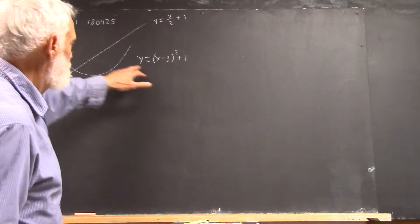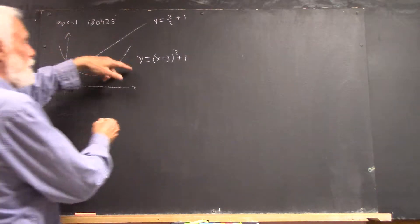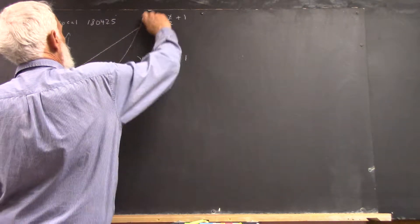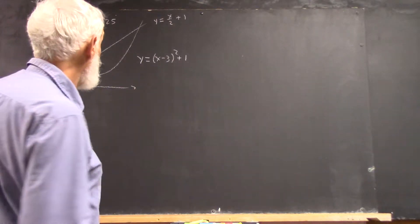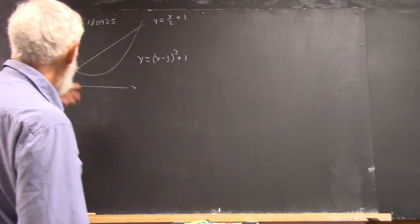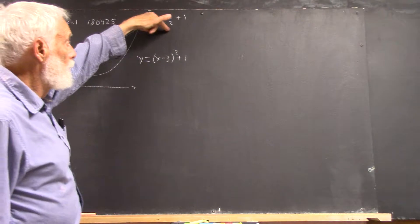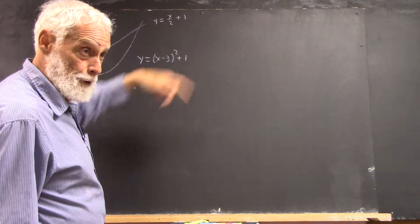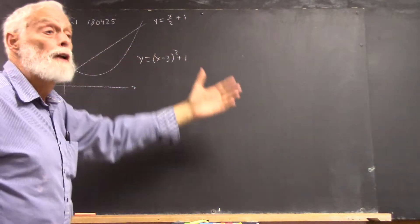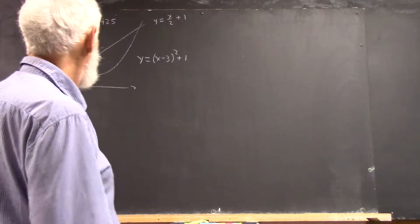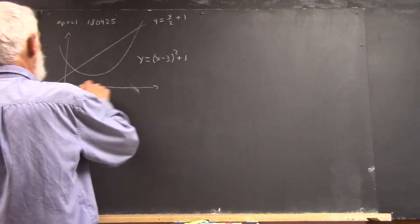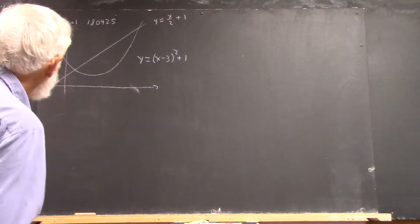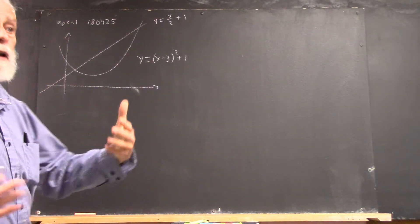We've got a parabolic region described by the quadratic equation y = (x - 3)² + 1 and the straight line y = x/2 + 1. We want to be able to describe this region. Before we can describe the region, we have to know what the limits are on our x values.